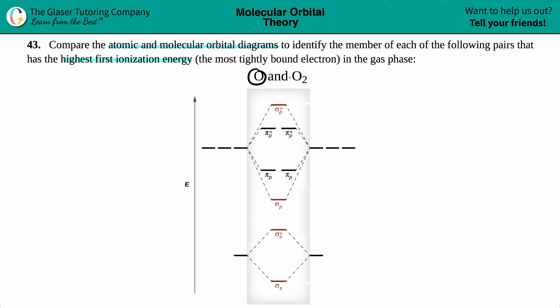So we have oxygen and then we have its molecule O2. Which one of these is going to have the highest first ionization energy? Well, remember an ionization energy is the energy needed to lose an electron. So we're going to be plucking off electrons, basically one electron, because it's the first ionization energy. So we're going to pluck off an electron from just oxygen and from O2, and one of them would have a higher energy.